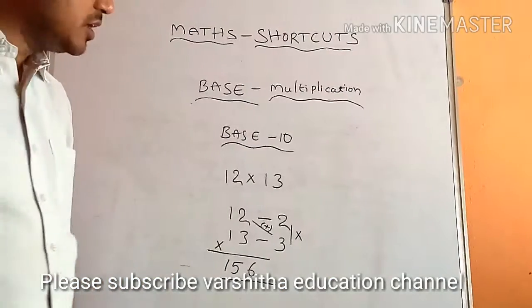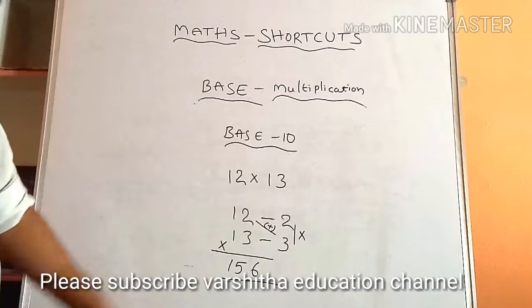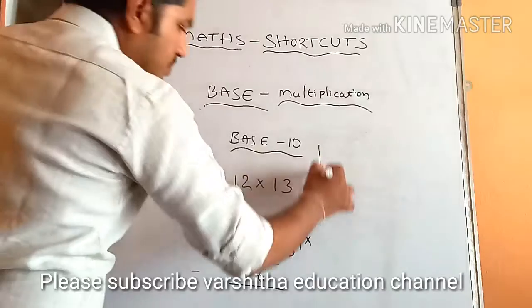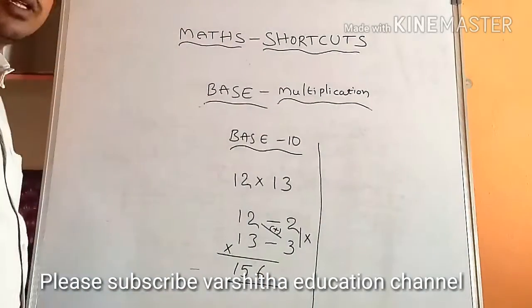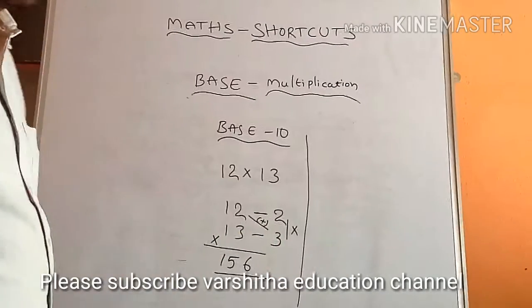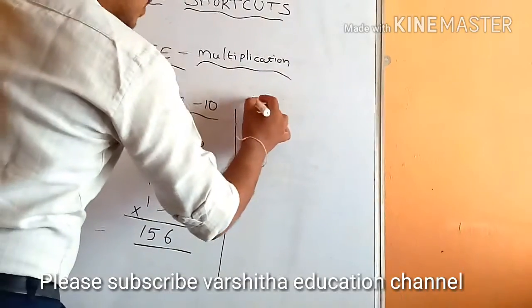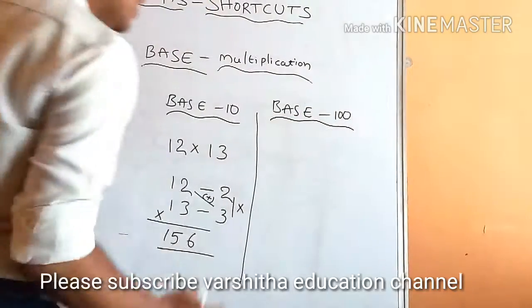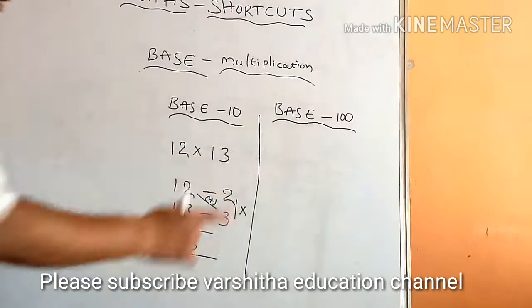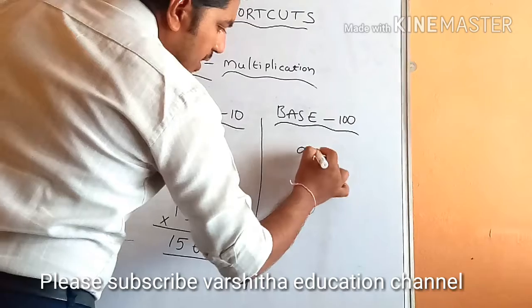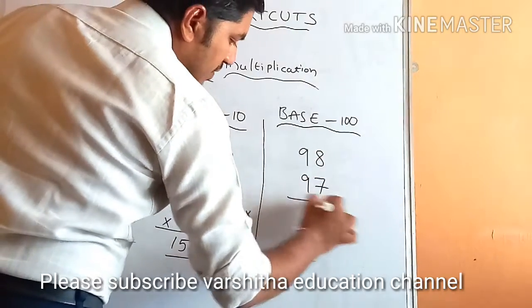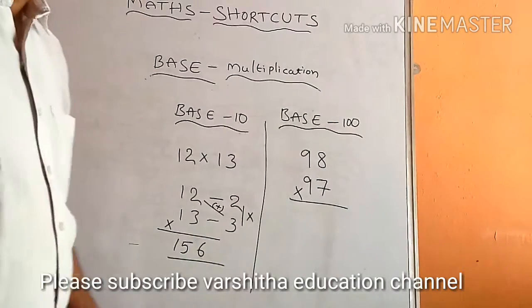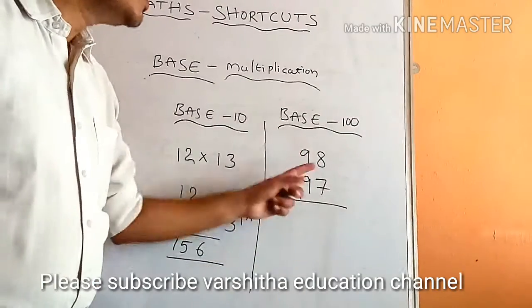want to take a big calculation, so base is 100. Now I want to take base as 100. See here, the base is 100. Once you take here, this is 98 multiplied with 97. So it is nearby 100 - it is the base. Then it is below 100. Now I am going to take - how